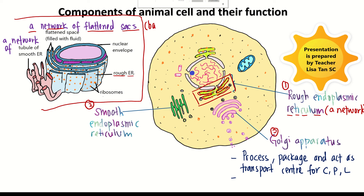The sacs are like bags. They are interconnected — you can see they are interconnected to each other. These are the lumen, or the space, and this space is filled with fluid. Number two, rough ER has ribosomes attached on its surface, so they appear rough.